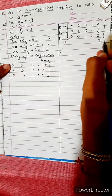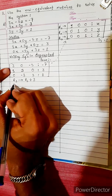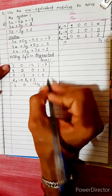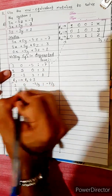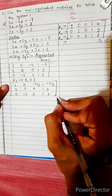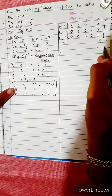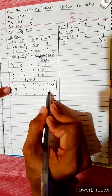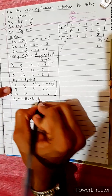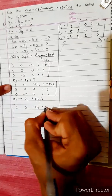We change R1 by dividing R1 by 3. So 3 divided by 3 is 1, 0 divided by 3 is 0, -5 divided by 3 is -5/3, and -7 divided by 3 is -7/3. The new R1 becomes [1, 0, -5/3 | -7/3].